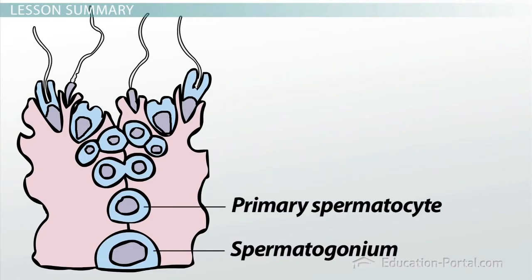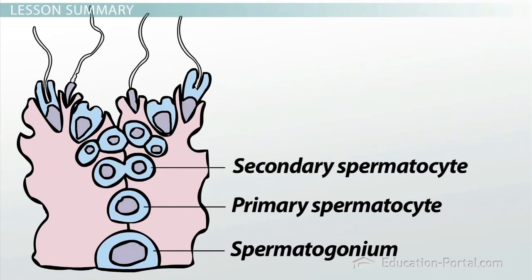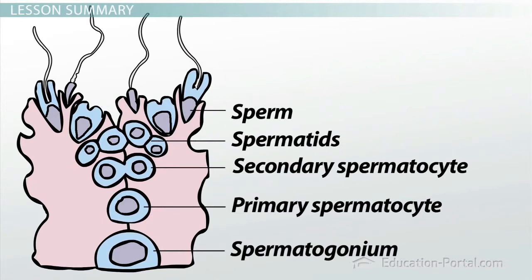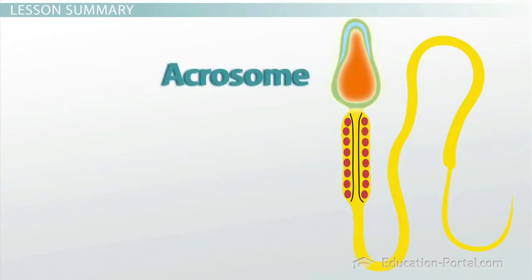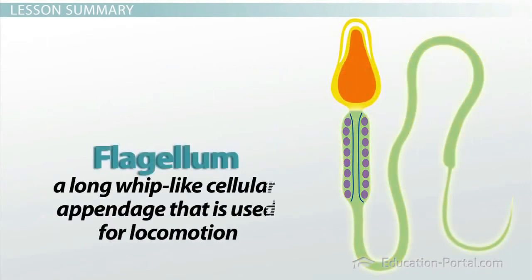Then it divides to form two secondary spermatocytes, which continue migrating and then divide to form four haploid spermatids. After meiosis is complete and each spermatid has the correct number of chromosomes, they differentiate into fully functional sperm. Mature sperm have a nucleus that contains the haploid genome and not much else. They also have an acrosome cap, which will be used to penetrate the outer layers of the ovum. In addition, they have a single flagellum, which is a long, whip-like cellular appendage used for locomotion. A sperm cell uses its flagellum, lashing it back and forth to propel the sperm forward.